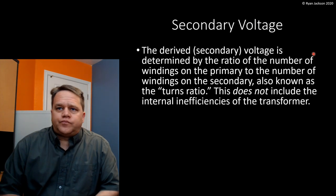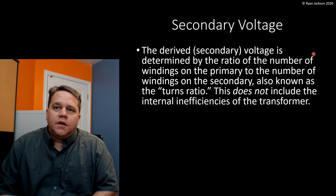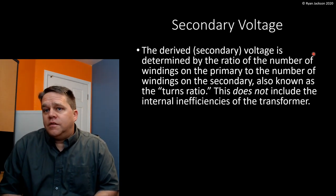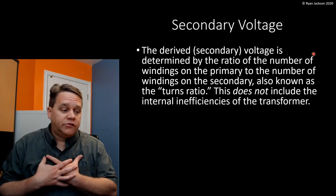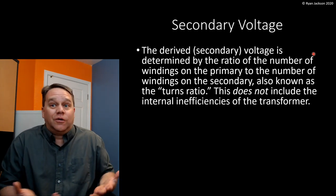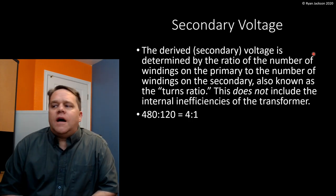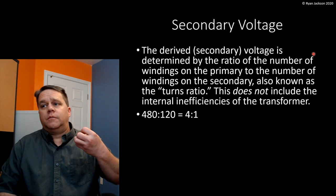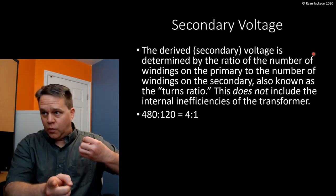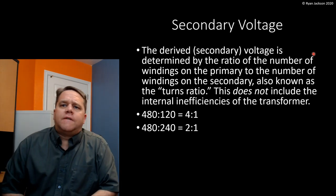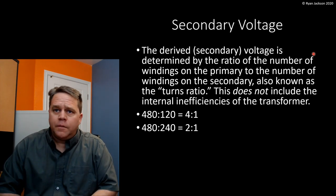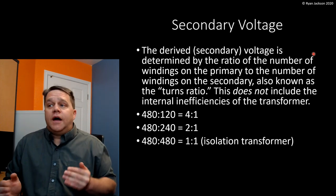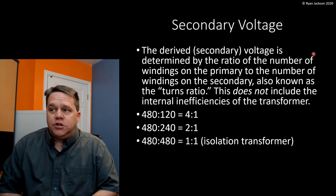The derived secondary voltage is determined by the ratio of the number of windings on the primary to the number of windings on the secondary — also known as the turns ratio. This does not include internal inefficiencies of the transformer. If I have a primary of 480 and a secondary of 120, the turns ratio is 4 to 1. From 480 to 240 would be a 2 to 1 ratio. From 240 to 120 is also 2 to 1. And if I want to go from 480 to 480 — a 1 to 1 ratio — we call that an isolation transformer. We create a new system without wanting a new voltage.